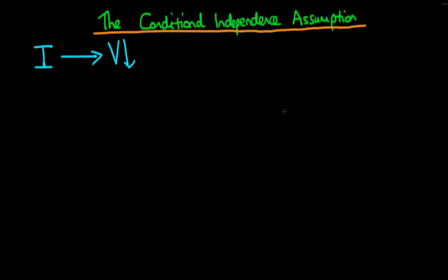In this video I want to talk about the conditional independence assumption and the role that this plays in the causal interpretation of econometrics. The idea here is that we're trying to evaluate whether infrastructure spending within a given district within a conflict area actually causes a decline in violence within that area.